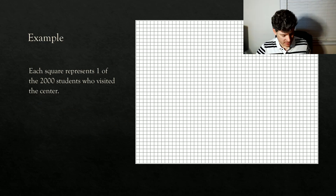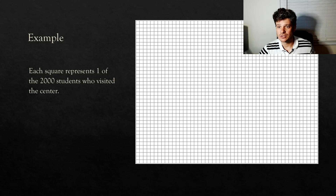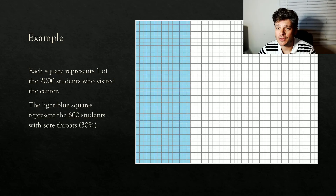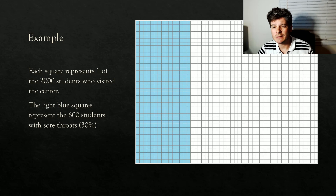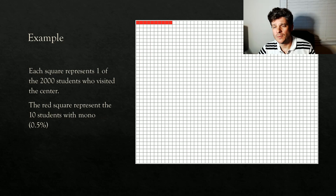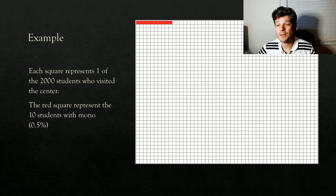Now let's visualize this as a grid. Each one of those squares represents one of the 2,000 students who visited the center — there are actually 2,000 squares there. The light blue squares represent those 600 students that have sore throats — 30% of all the total squares are colored blue. Then for mono: mono is only 10 out of those 2,000, shown in red. That's 10 out of the 2,000 students.